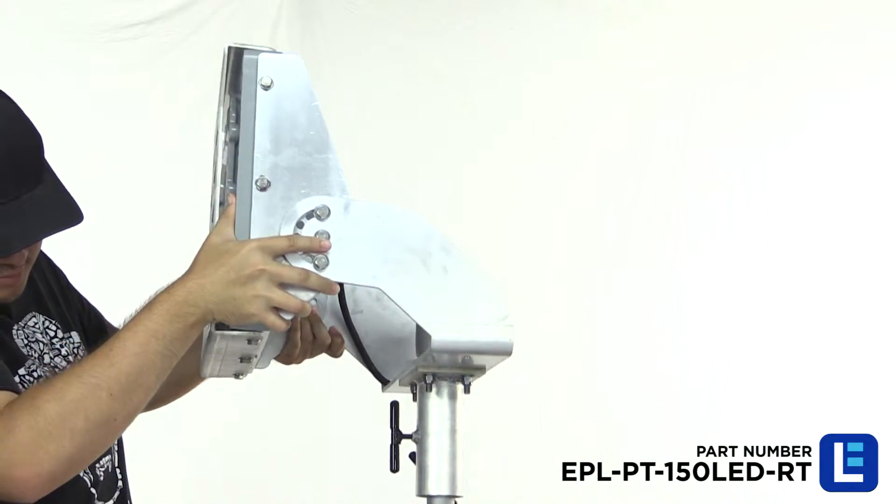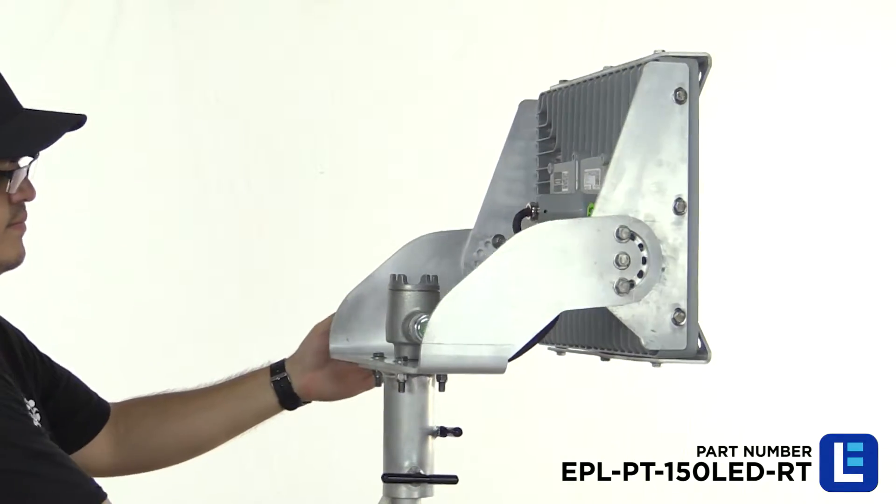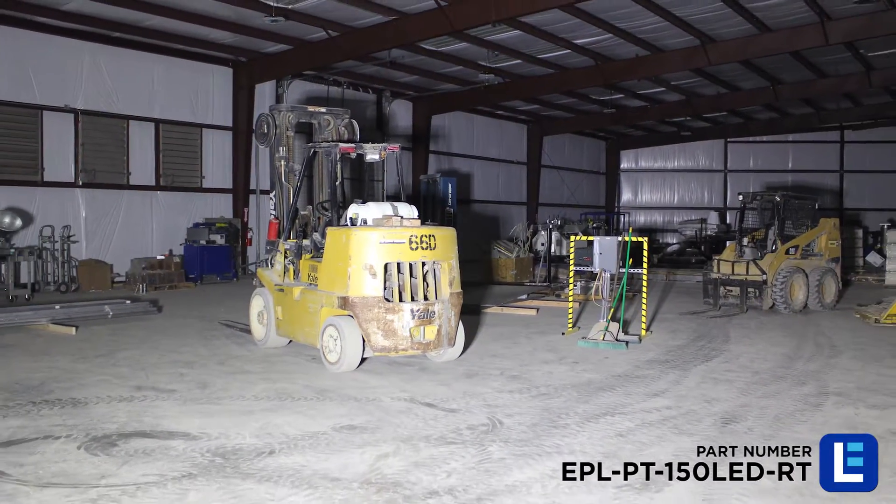This class 1 division 1 and 2, class 2 division 1 and 2 pole top explosion proof light fixture provides 13,000 lumens of high quality light while only drawing 150 watts.